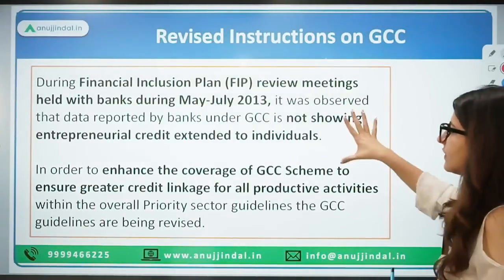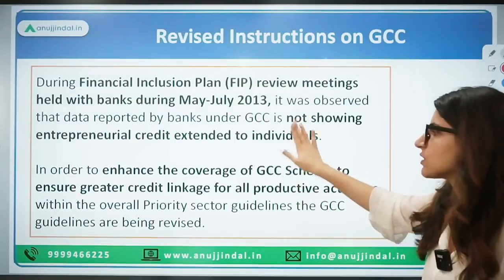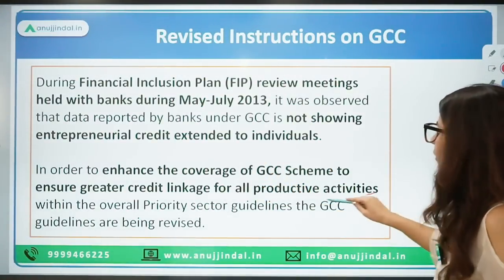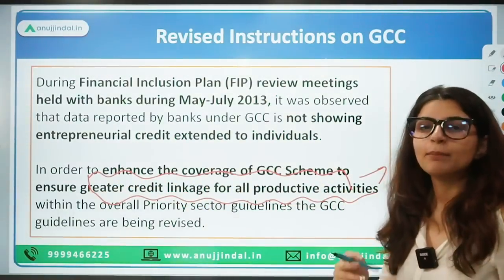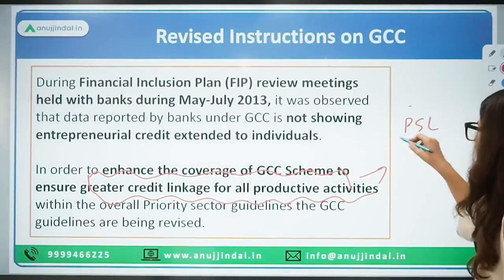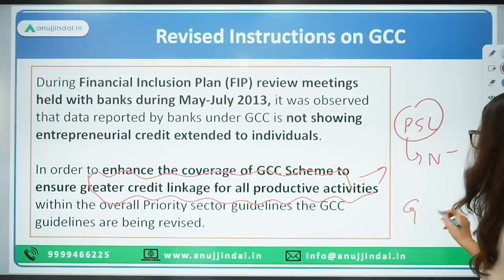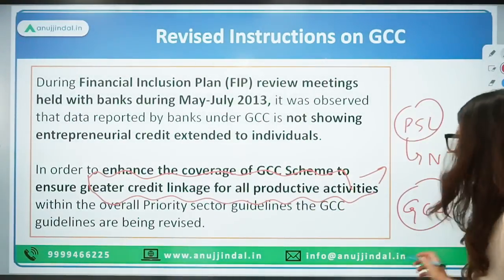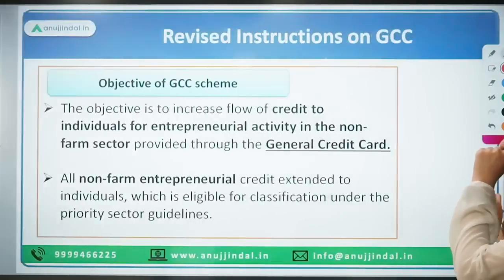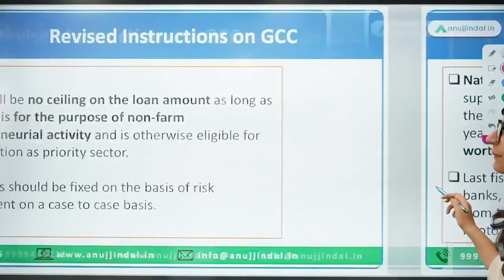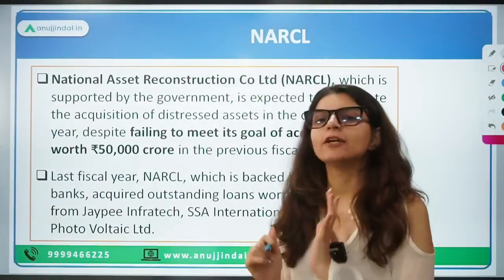To summarize the GCC: in 2013, it was decided that banks were not reporting adequately. After 2013, to ensure greater linkage for all productive activities, it was decided that banks will report, and thus PSL credit under non-farm entrepreneurial activities given through GCC shall be reported under these guidelines. This brings us to the end of the first topic. Let's look at the second topic: NARCL.